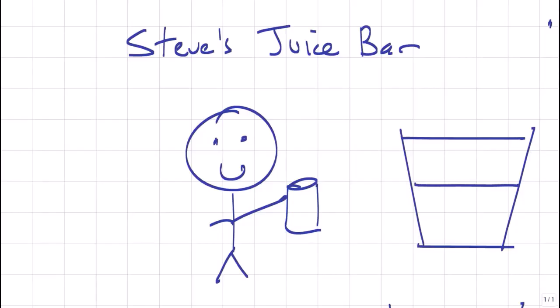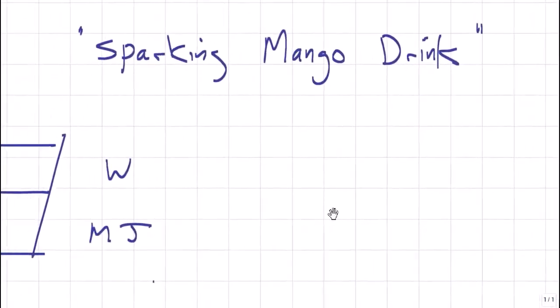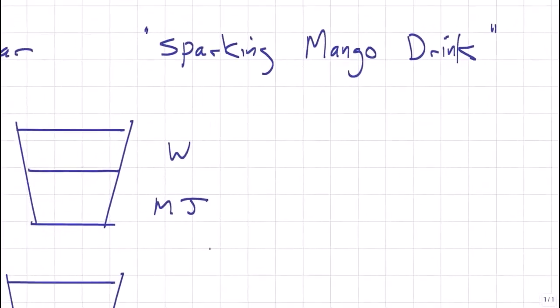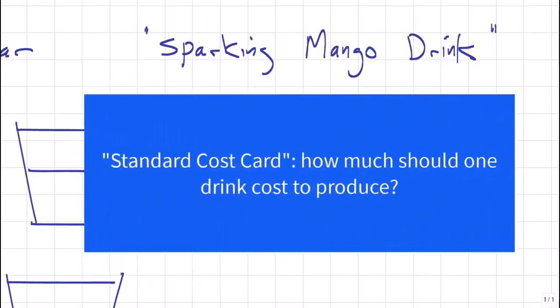Today, we're looking at my imaginary business, Steve's Juice Bar and my new delicious product, the sparkling mango drink. Now we're here to learn about the mix and the yield variances. We'll use this simple business and this simple product to illustrate all. First step when we are doing variance analysis is to understand how much one unit should cost. And as you know from MA, that is called the standard cost card, really simply the budget for one unit.